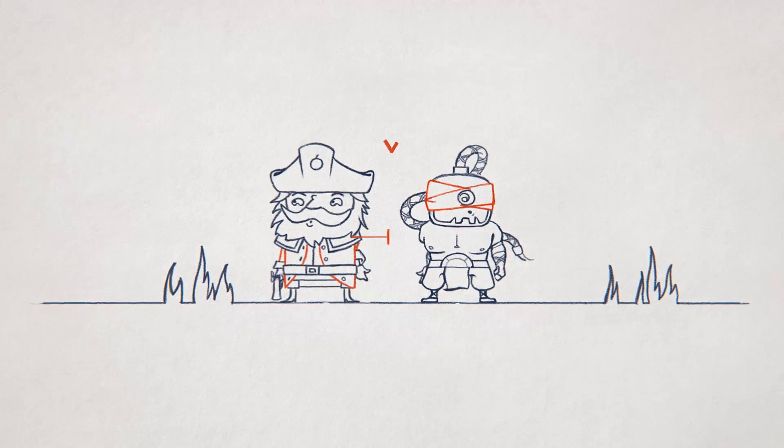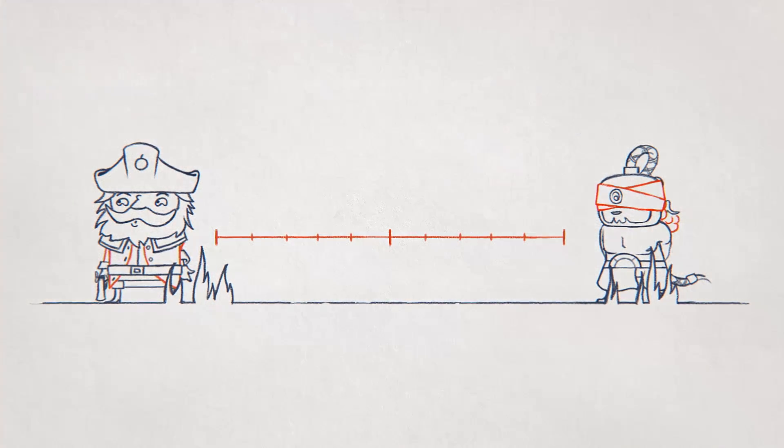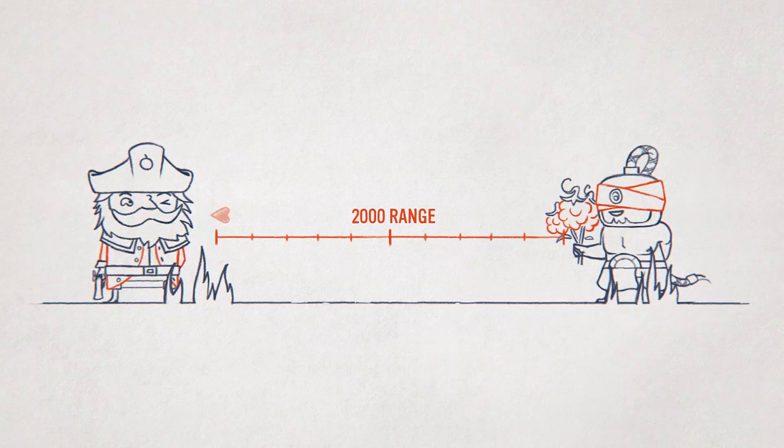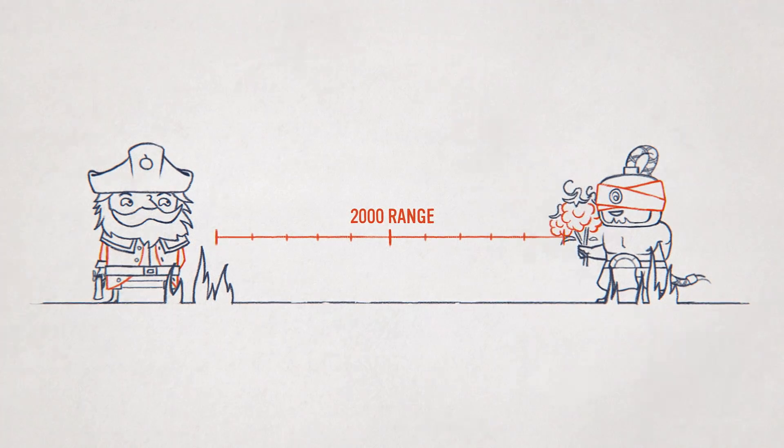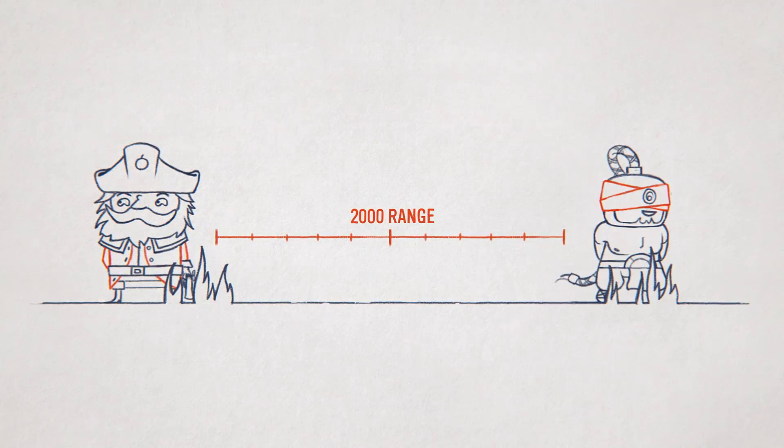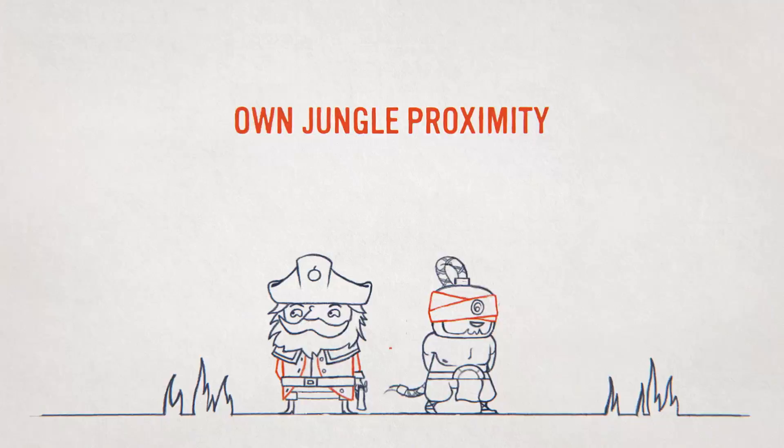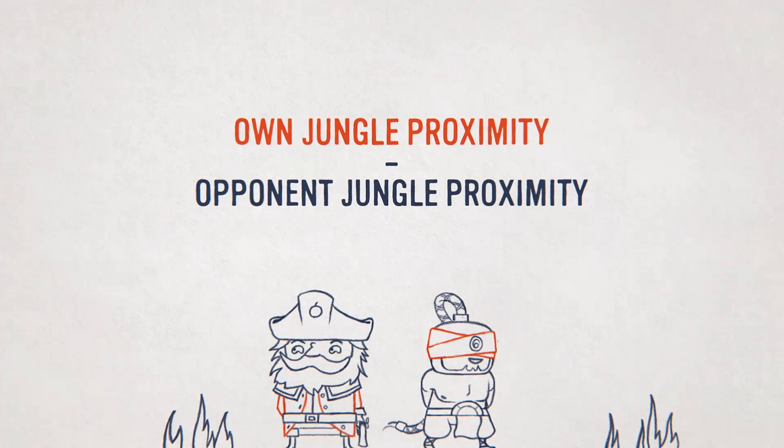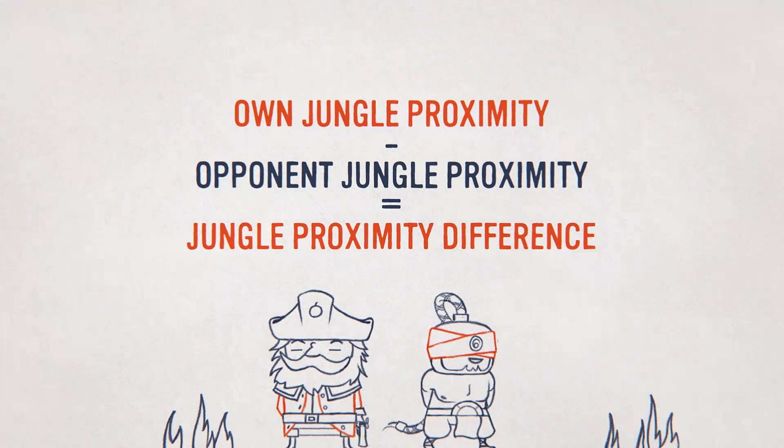One way we can work this out is to look at the jungle proximity difference. This is the amount of time your jungler spends within 2000 range of you, from 3 to 15 minutes of game time. Essentially, it's a measure of how much he's your buddy. We can also look at how much time the opponent jungler spends with the enemy top laner. So if we look at someone's jungle proximity minus the opponent's jungle proximity, we get the jungle proximity difference.